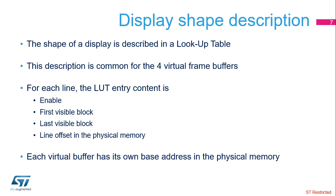All the line parameters are stored in an internal lookup table. The description is the same for all four virtual frame buffers. For each line, the following parameters are stored: the enable bit of the line, the number of the first visible block, the number of the last visible block, and the line offset in the physical memory. The line offset is the offset between the physical buffer base address programmed by the user and the address where block 0 of the line has to be stored.